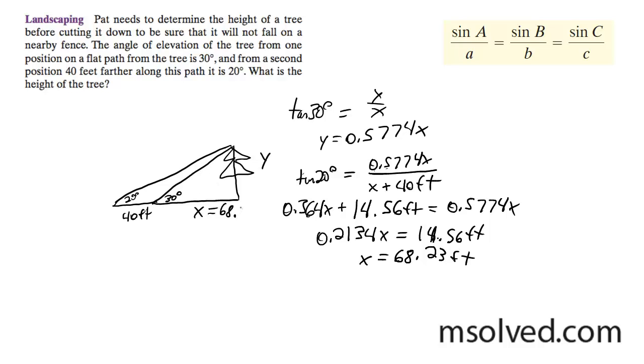Now, since I have this, I can go ahead and solve for y. That's going to be tangent of 30 degrees equals y over 68.23. Now, I'm just going to multiply these two together, so y, which is the height, is going to be tangent of 30, which was 0.5774, times 68.23 feet, which is going to get me 39.39 feet. You can just round to 39.4 feet.